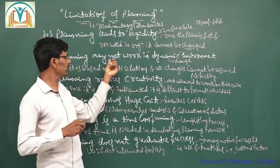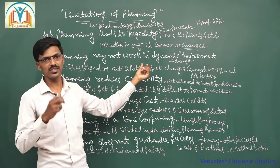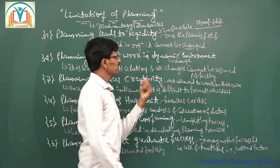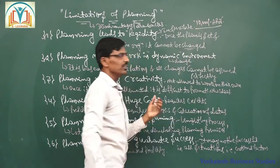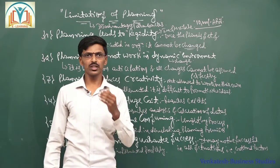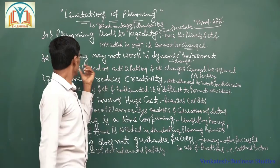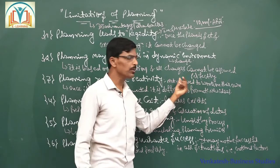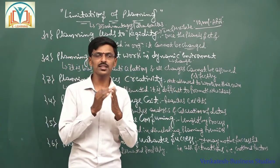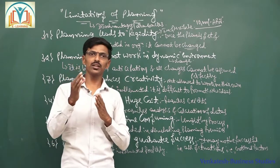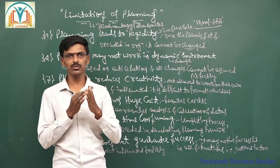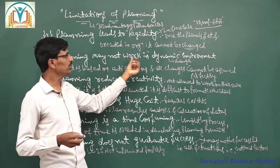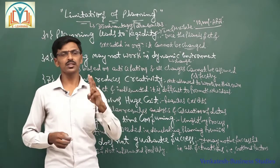For example, you made a plan to manufacture 10,000 units in a month, but suddenly a lockdown came because of COVID-19, which we could not have assumed would happen. Planning is based on anticipation, and all changes cannot be perfectly assumed. Whatever changes occur in the external environment, we cannot account for them all, which is why planning may get a failure in the enterprise. That is the second limitation.